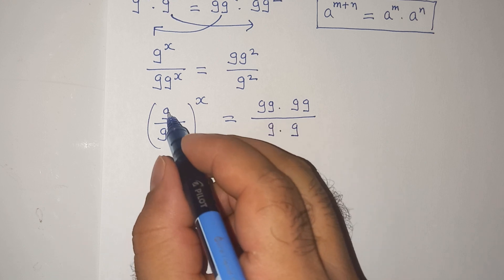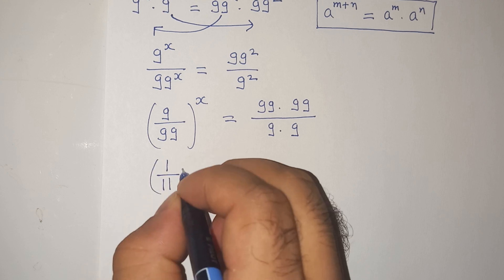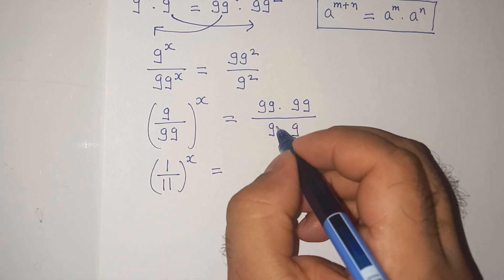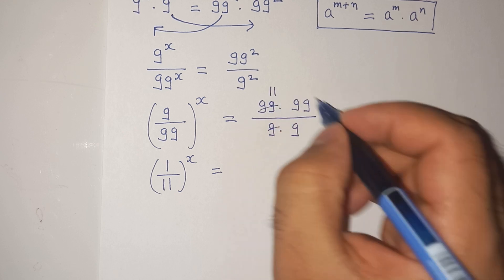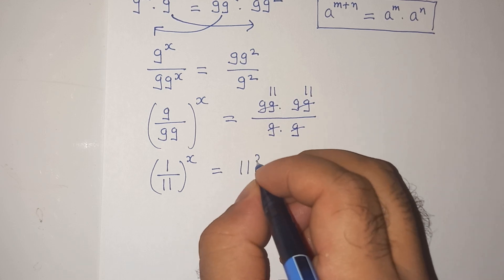So this 9 divided by 99 will be 1 divided by 11 power x and let's divide 99 divided by 9 is 11 and same. So 11 multiplied 11 is 11 square.